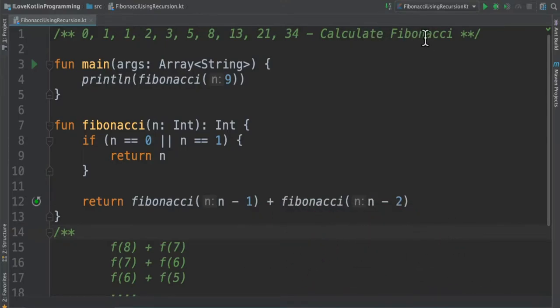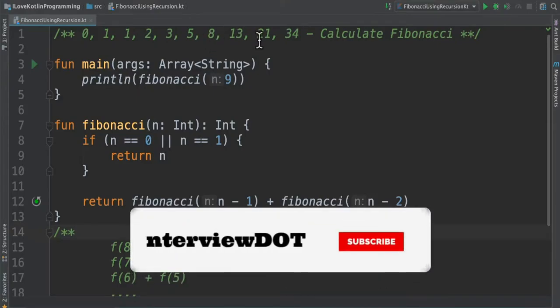What is the Fibonacci series? It's a series of numbers where we sum the previous two numbers. For example, 0 plus 1 equals 1, 1 plus 2 equals 3, 2 plus 3 equals 5. We keep adding the previous two numbers and generate the series.